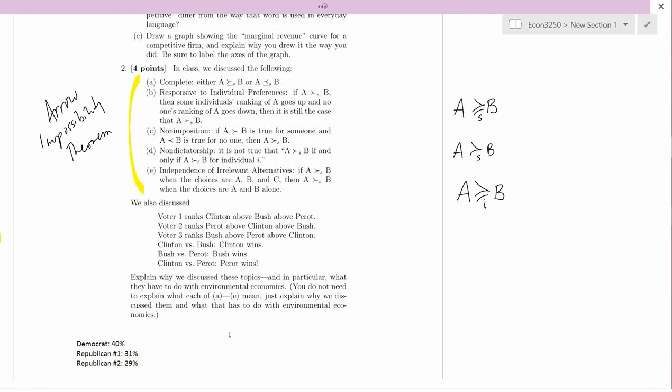And finally, and this is actually a little bit more controversial, independence of irrelevant alternatives. If society picks A over B when the choices are A, B, and C, then society's still going to pick A over B when the choices are just A and B alone. C here, if you're asking do you want A or B, C is the so-called irrelevant alternative. So society goes for A over B when C is another possible choice, then if you take C away, society is still going to prefer A over B.